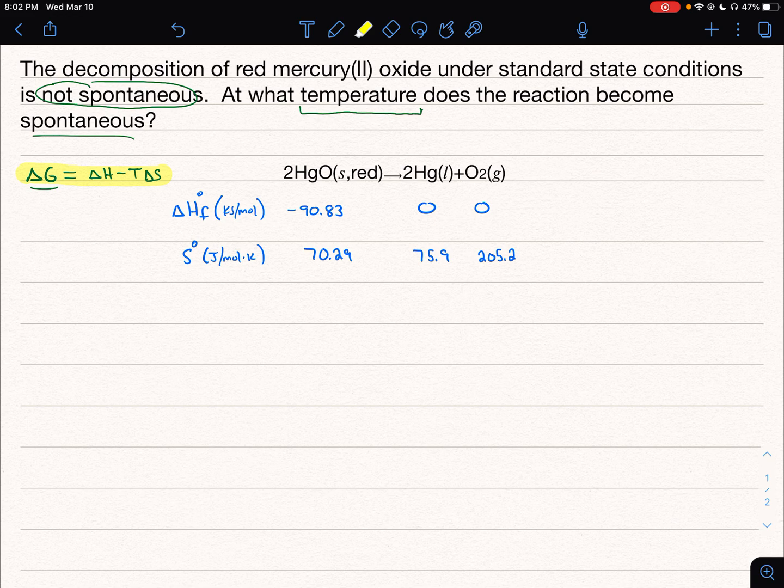So when we go about solving this problem, the first thing we're going to have to do is look up some values. And so what's shown in blue here, these values come from appendix G of your textbook. And what we have are the enthalpies of formation and the standard molar entropies of all of the reactants and products in our balanced chemical equation.